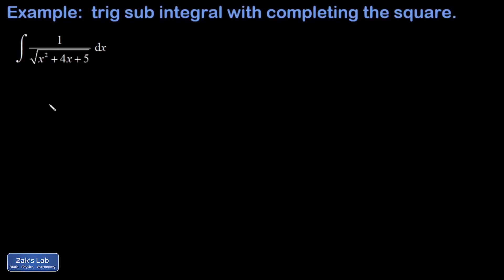In this video we're computing an indefinite integral that's going to require a trig substitution, but to get set up for the trig substitution we have to complete the square. The whole point of completing the square is to take care of all these variable pieces with a squared binomial.